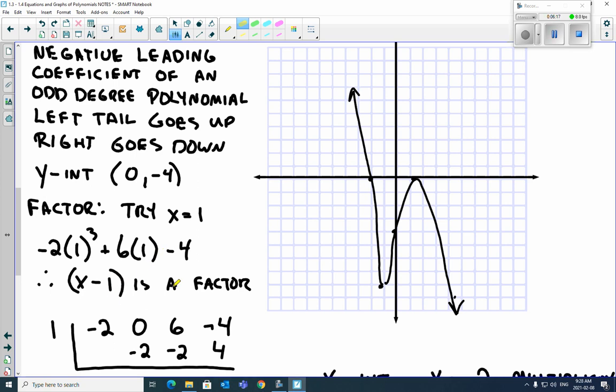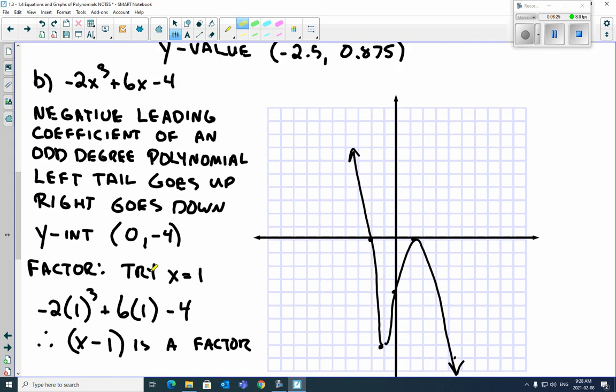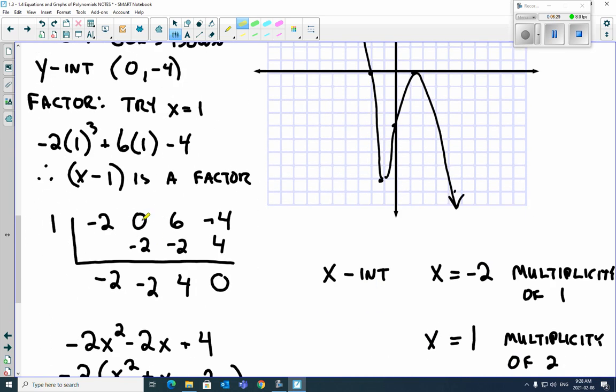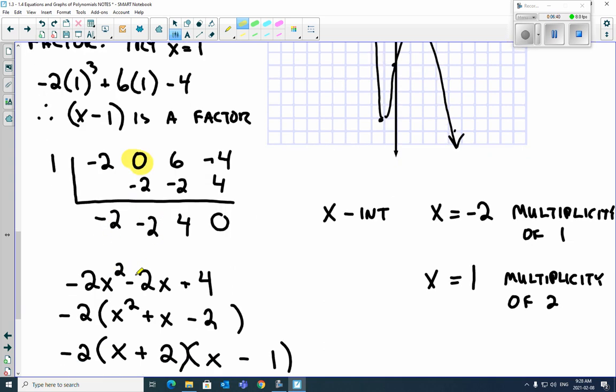Well, since we do binomial remainder theorem, well, how do we get to the next polynomial? You do synthetic division. So we plug in all the coefficients. Now, don't forget, this is x cubed and then an x. We're missing the x squared. So when we do synthetic division, we have to put a 0 in there. We need that placeholder. So we do all the work. And you know you did it right because you end up with a 0, which we found in remainder theorem. So we end up with negative 2x squared minus 2x plus 4.